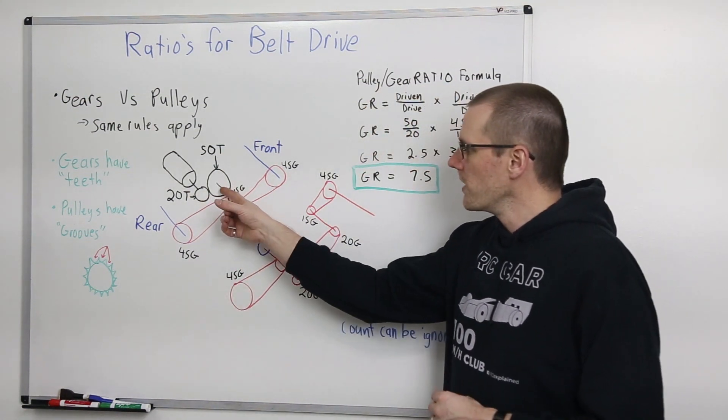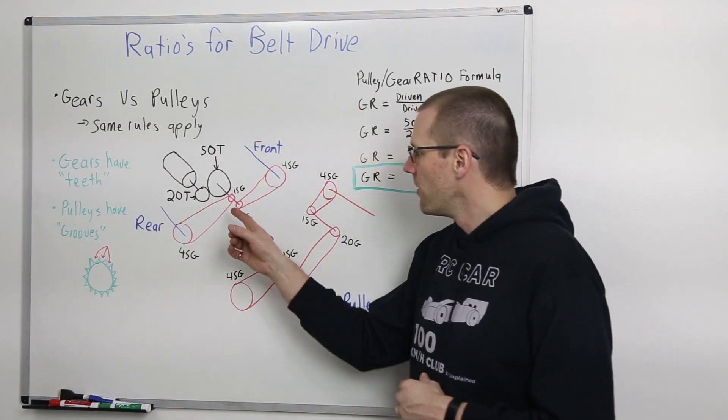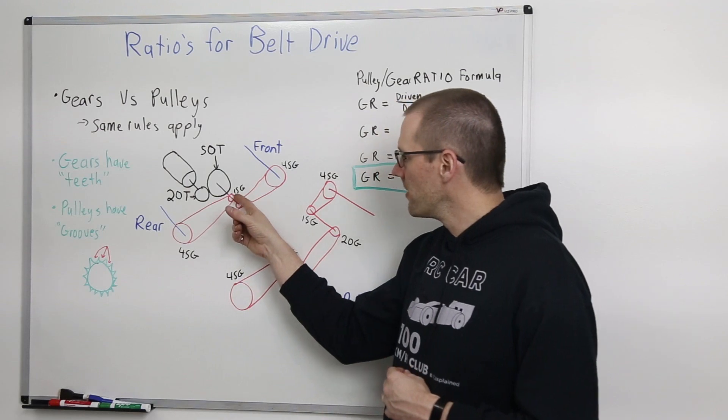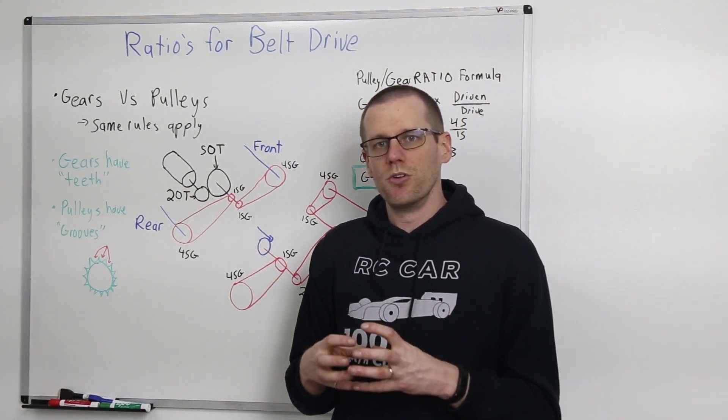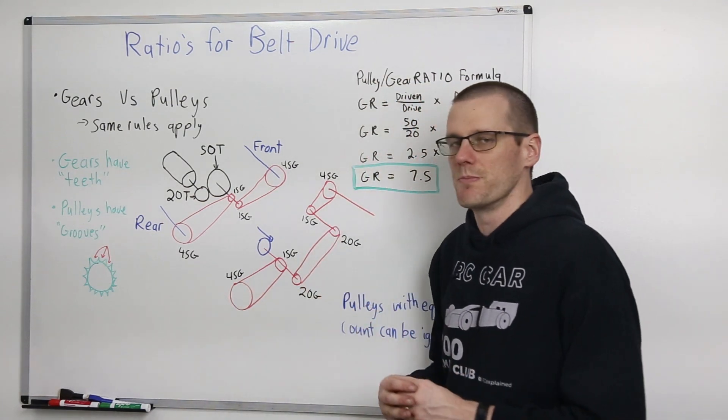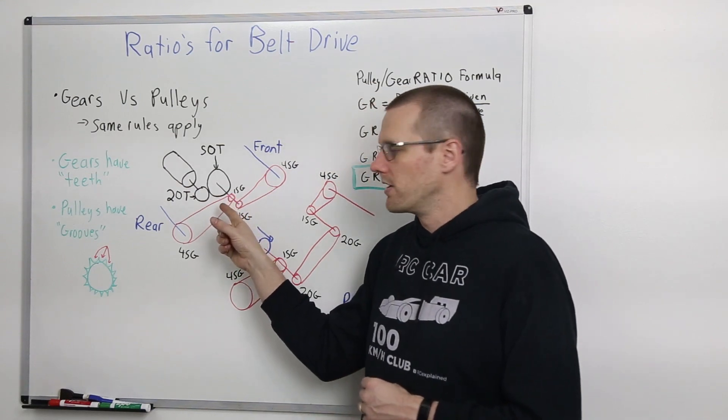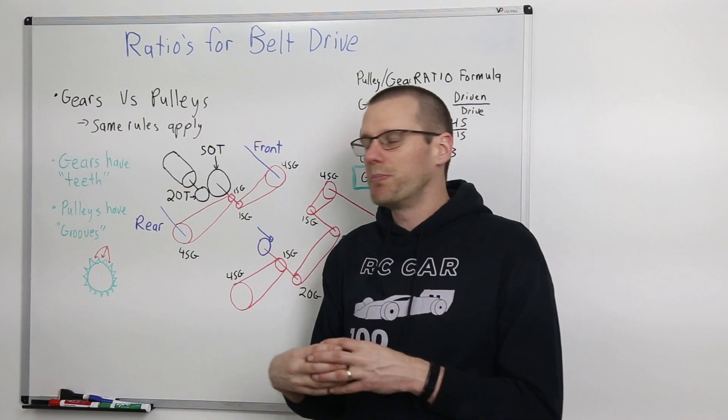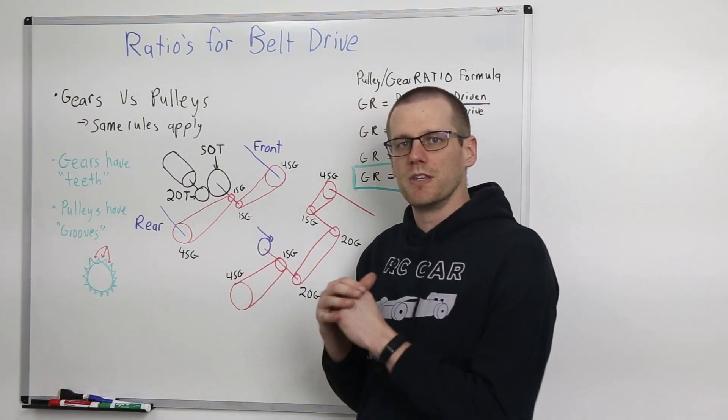Then from that spur gear, we have a shaft with two pulleys directly attached to it. One of the pulleys here has a 15 groove, and then the second one here on the exact same shaft also has a 15 groove. Now one assumption that we should make, and this is a good assumption, is that the ratio between the drive here coming from that spur gear to one of your shafts, whether it be the rear axle or the front axle, those ratios should be the same.